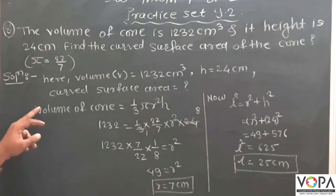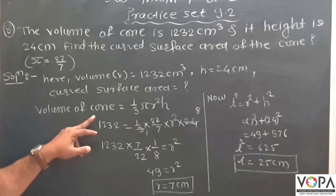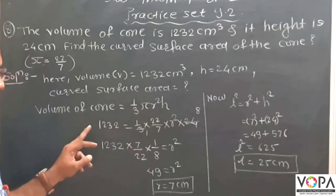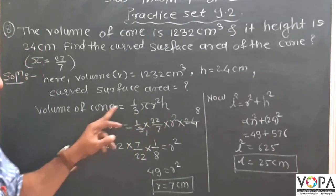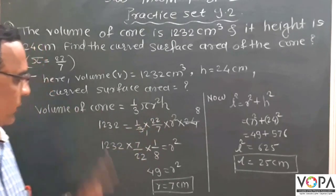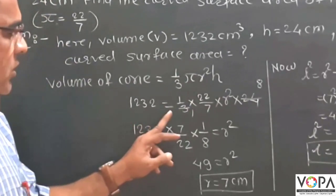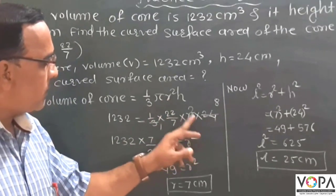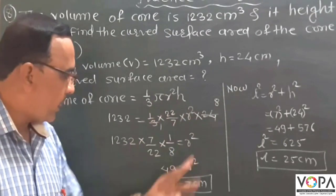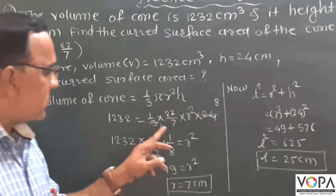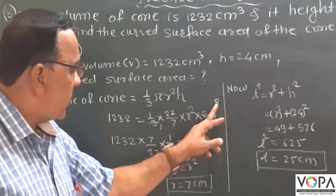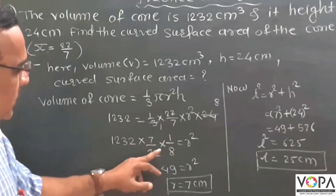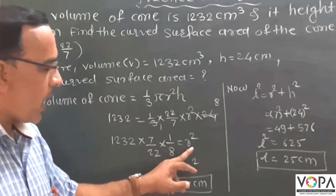Now first we calculate the volume of cone. Volume of cone is equal to 1 upon 3 pi r² h. Then put the value of volume of cone and height and pi value. Now 1232 is equal to 1 upon 3 multiplied by 22 upon 7 multiplied by r² multiplied by 24. Divide this term, 3 into 24. Now 1232 multiplied by 7 upon 22 multiplied by 1 upon 8 is equal to r².